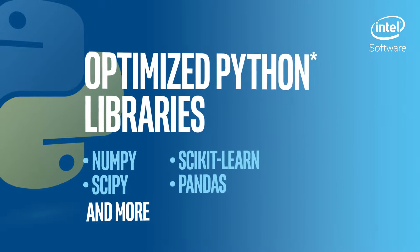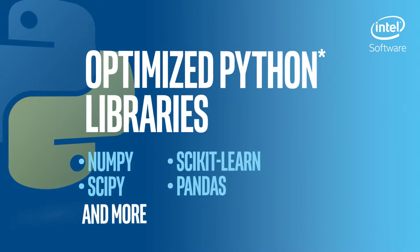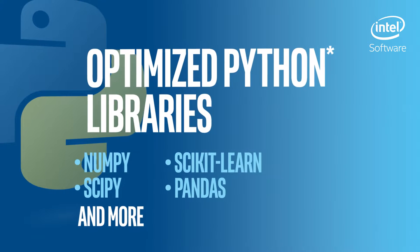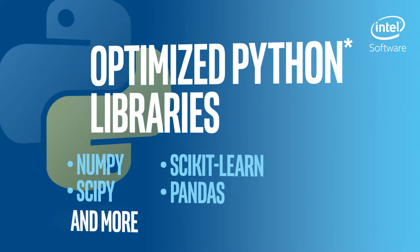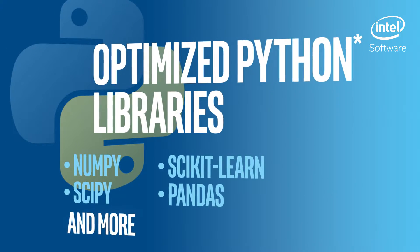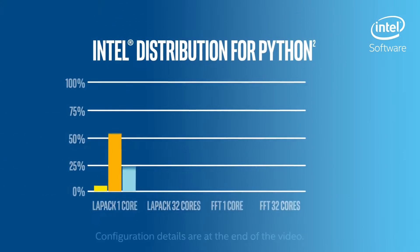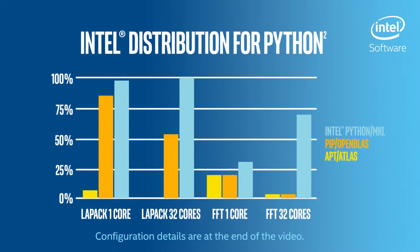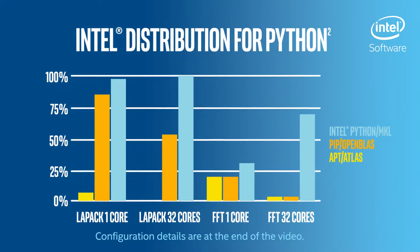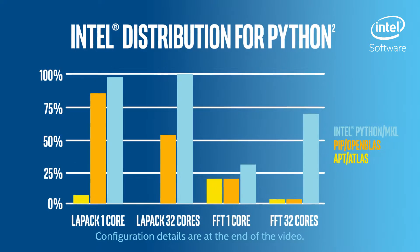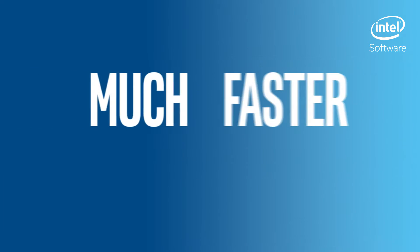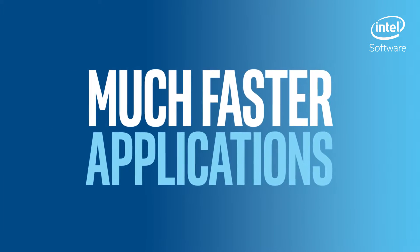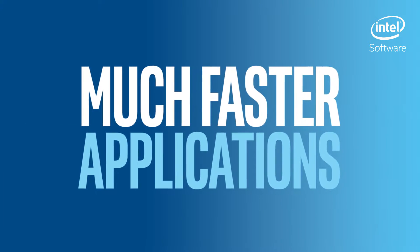Intel Distribution for Python builds on Intel's optimized libraries to overcome performance limitations. You'll see the difference in your results. A comparison showed that Intel Distribution for Python with Intel Math Kernel Library supercharges performance on modern processors.